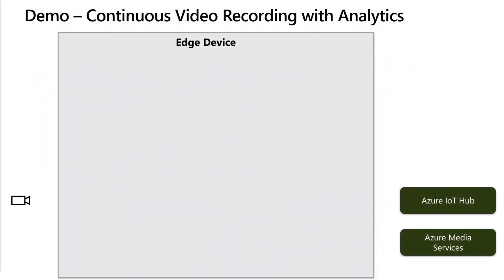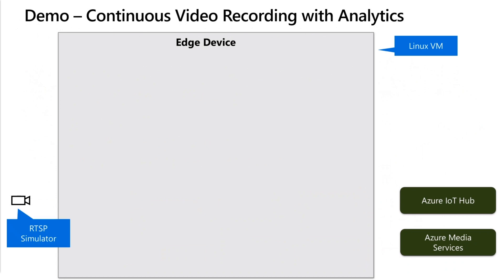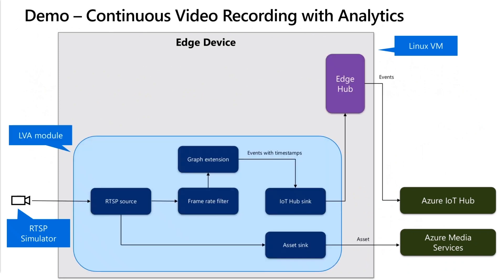Let's see all that in action and understand how LVA works as a module, especially how it works with other AI modules. Here is the demo setup. On the left-hand side there is a video source, in the middle is the edge device, and then there are two Azure services: Azure Media Services and Azure IoT Hub. I'm going to use a Linux VM as the edge device, and on it we'll push a video stream using an RTSP simulator instead of a real camera. We're going to deploy the Live Video Analytics module on it with a graph that captures video, samples frames, and uses the graph extension to send those frames to an AI module.